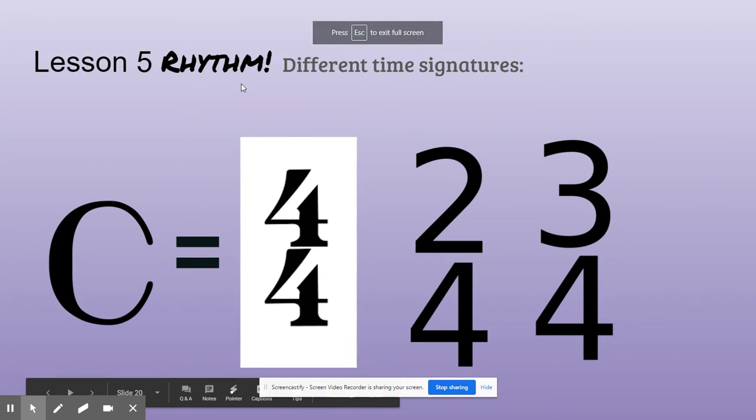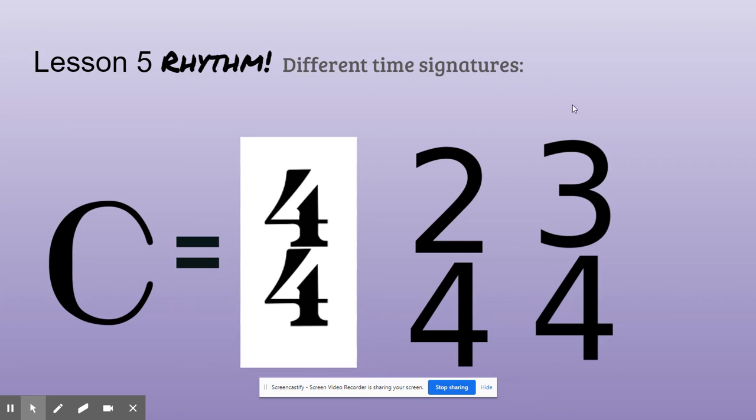Boys and girls, this lesson is still about rhythm, but it's about different time signatures. So we've been dealing with a 4-4 time signature. 4-4 is the most common of all time signatures. Sometimes in the time signature place, which is usually at the top left corner of the music, you will see a C.